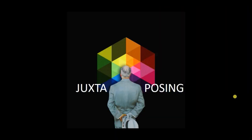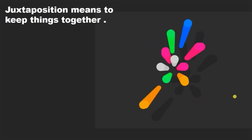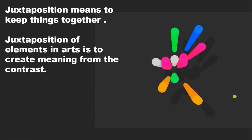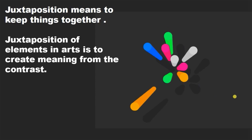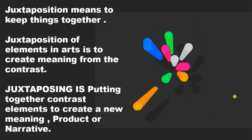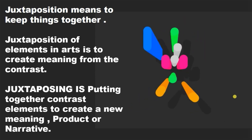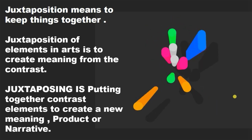In today's chapter we are going to discuss this special tool called juxtaposition. Juxtaposition means to keep things together. Juxtaposition of elements in arts and design is to create meaning from the contrast — putting together contrasting elements to create a new meaning, a new product, or a new narrative.